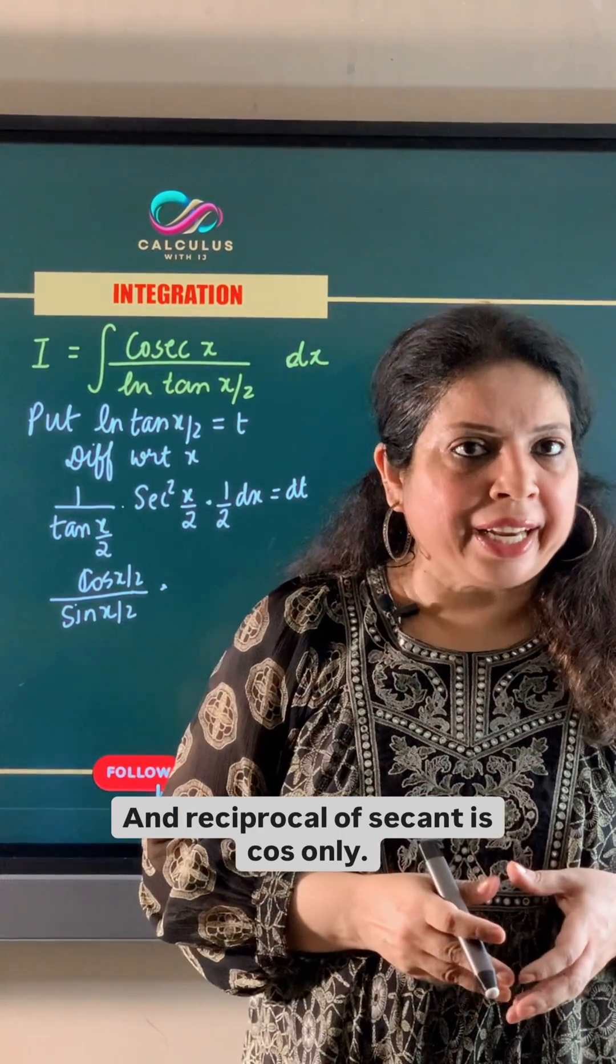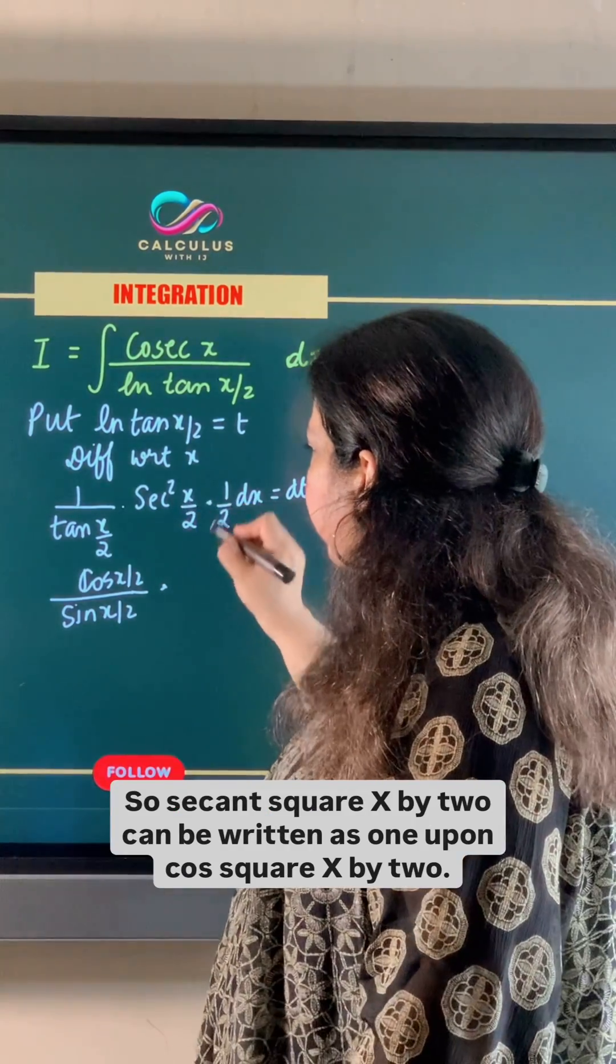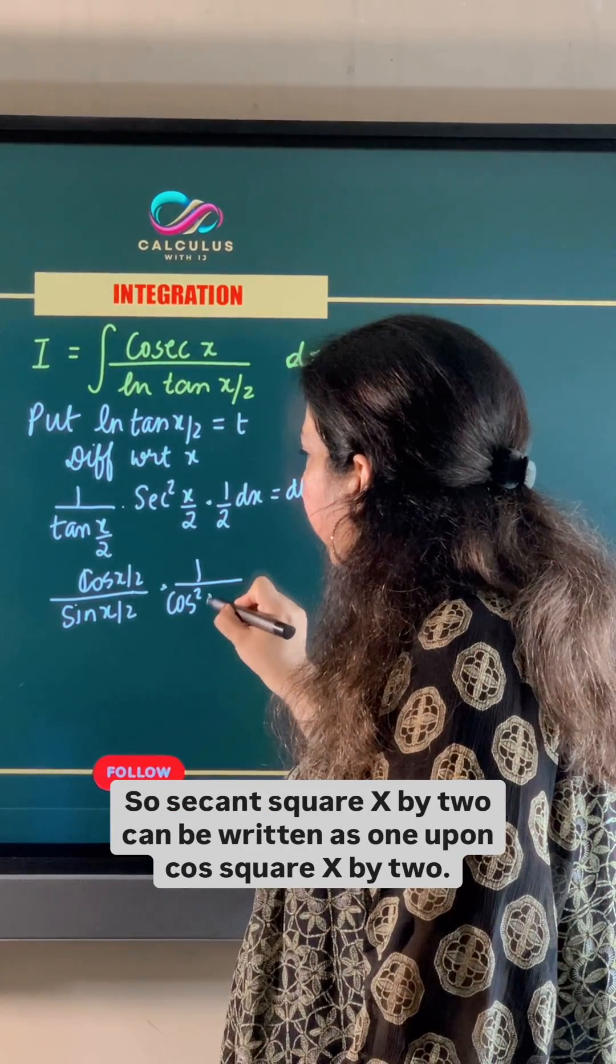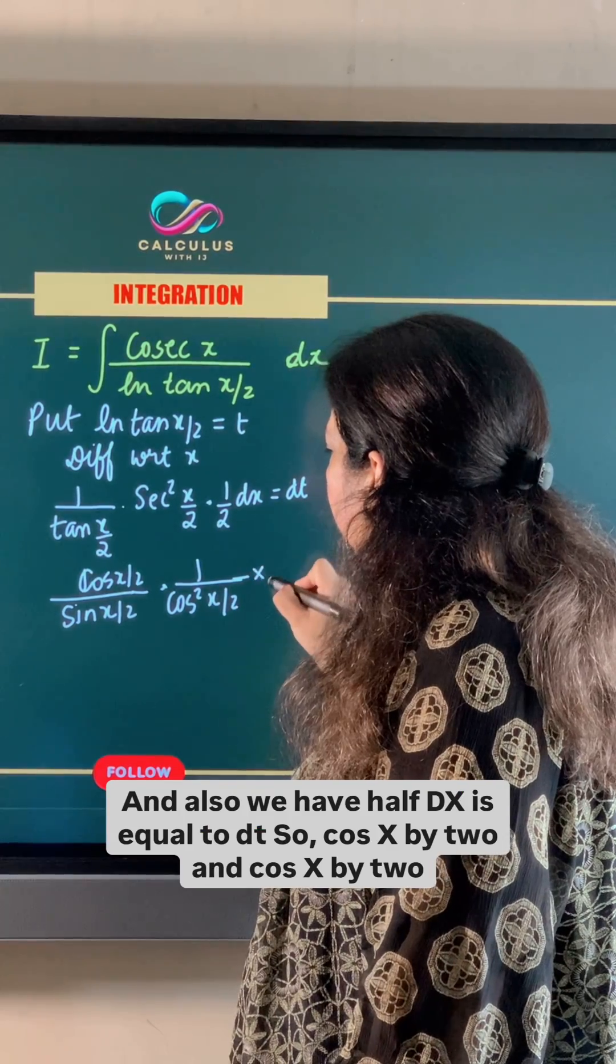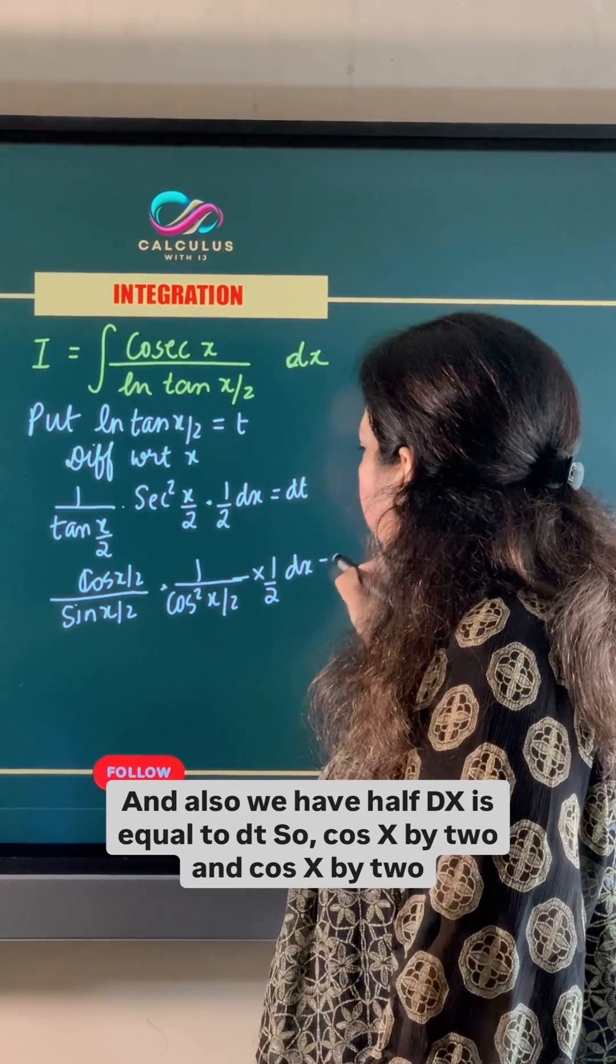And reciprocal of secant is cos only. So secant square x by 2 can be written as 1 upon cos square x by 2. And also, we have half dx is equal to dt.